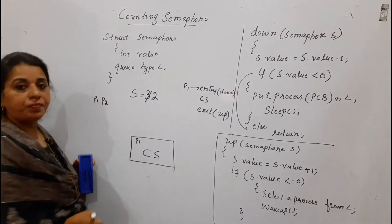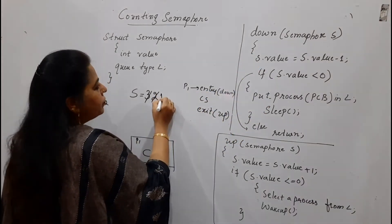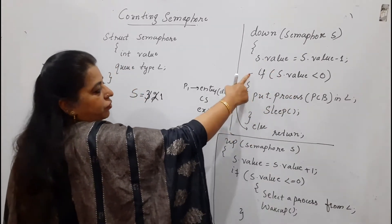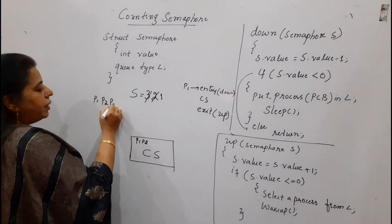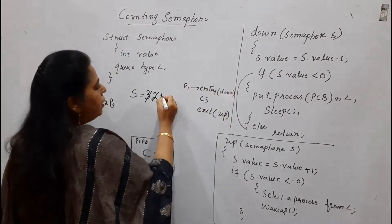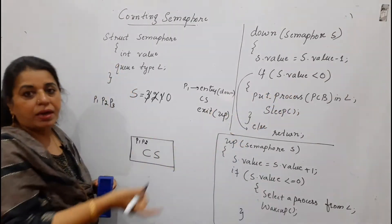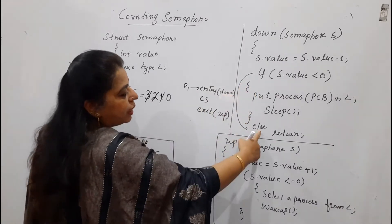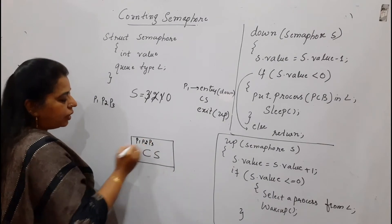Suppose P2 wants to enter — P2 will also perform the down operation, decrementing the semaphore value by 1. Check: is 1 less than 0? Condition is false, so P2 enters the critical section. Now P3 wants to enter: 1 minus 1 equals 0, so the semaphore value becomes 0. Is 0 less than 0? No, 0 is not less than 0 — condition is false. So P3 also comes to the else part and enters into the critical section.